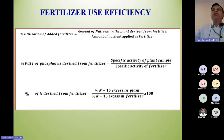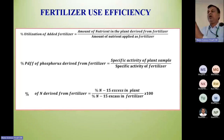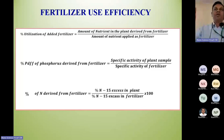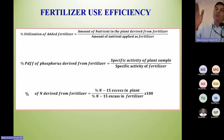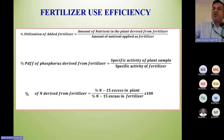Then there is the indirect reverse isotope dilution method. In the normal case, we use labeled fertilizers. But in the case of rock phosphate, which is not soluble and cannot be labeled with any radio tracer, we use the reverse isotope dilution method — where we label the soil instead. When unlabeled fertilizer is applied, the availability of native phosphorus is reduced, which is measured through the labeled soil rather than labeled fertilizer.